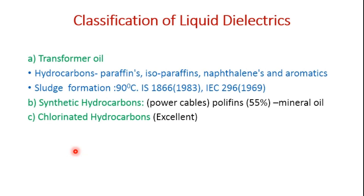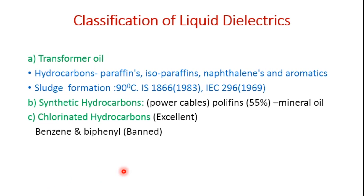Then we have chlorinated hydrocarbons. These are composed of benzene and diphenyl, which are chlorinated to produce a chlorinated aromatic compound called askarels, or simply PCBs. These have high fire point and excellent electrical properties, but they have been banned because of serious health hazards.